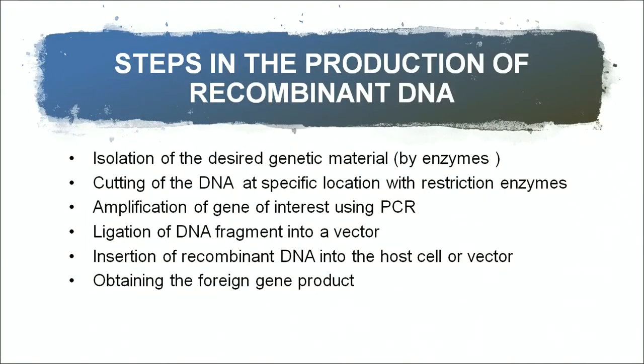What are the steps involved in the production of recombinant DNA? The first and foremost step is the isolation of the desired genetic material. We have to isolate the desired genetic material from a cell using enzymes, because a cell contains RNA, proteins, carbohydrates, and lipids — all these materials need to be discarded to get a purified genetic material.